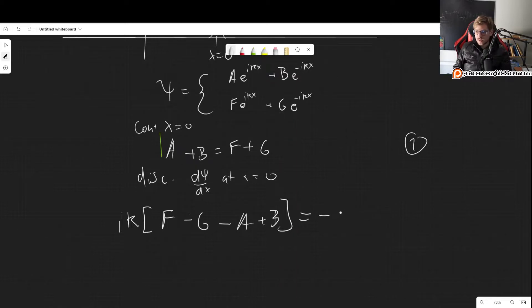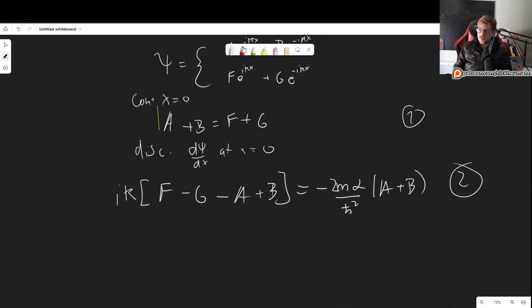So we get ik times F, evaluating at 0, of course the exponentials go to 1, so F - G. And then we get minus this derivative, so we get A + B. And this is equal to minus 2mα divided by ℏ² times our wave function evaluated at 0. So we can take any of the two forms. I will take A + B because it's more convenient, but it doesn't really matter. You will get to the same result anyways. So this is equation 2.